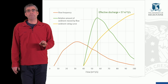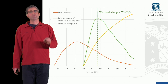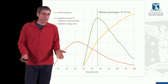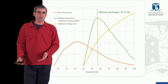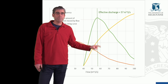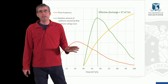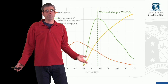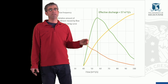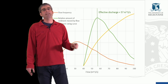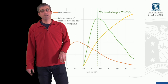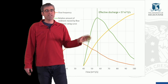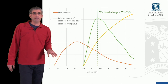What we need to think about is the flow at which most sediment is being transported in the river. At low flows there's not much sediment being transported because the capacity of the river to transport sediment is low. At very high flows, although the capacity of the channel to transport sediment is high, those flows don't occur very often, so over time they don't contribute much to the total sediment transport in the river. It's the intermediate flows where there's a reasonably high sediment transport capacity and those flows occur reasonably frequently that provides most of the sediment transport. Those intermediate flows are called the effective discharge, and that's shown graphically here.